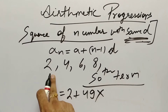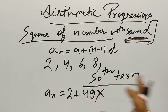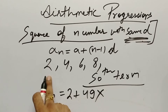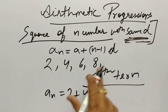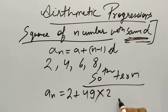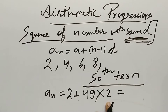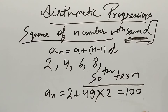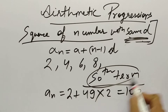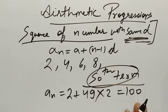D is the common difference: a2 minus a1 is 4 minus 2 equals 2. So d equals 2. Now 49 times 2 is 98, and 98 plus 2 is 100. So the 50th term is 100. This is a one or two marks question that can come in the exam.